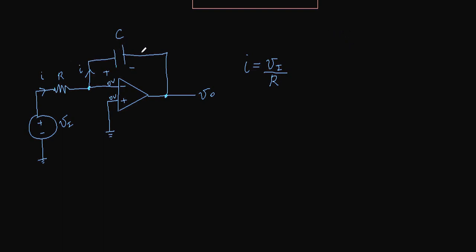The current I equals VI over R. This current must flow through the feedback capacitor. The current through a capacitor is I equals C times d(V_C)/dt. We need to find the voltage across the capacitor.